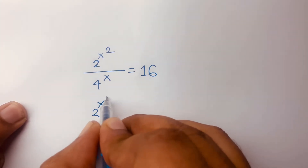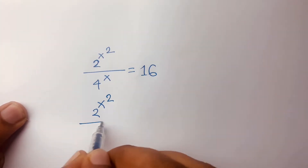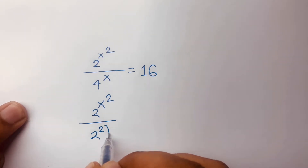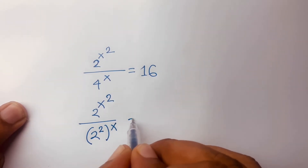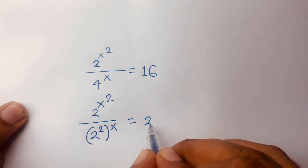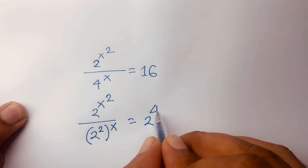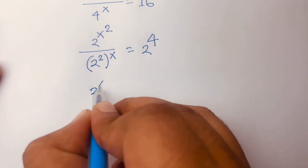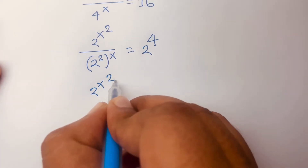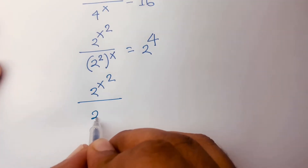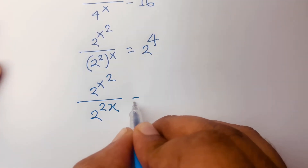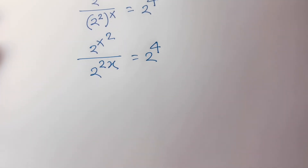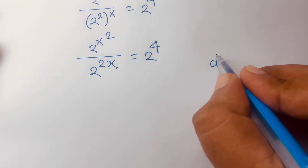It will be 2 to the power x squared, and we know that 4 is 2 to the power 2, bracket power x, is equal to 16, which is 2 to the power 4. Then this equation becomes 2 to the power x squared and 2 to the power 2x is equal to 2 to the power 4.